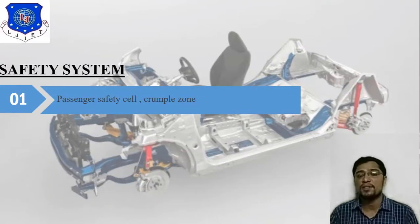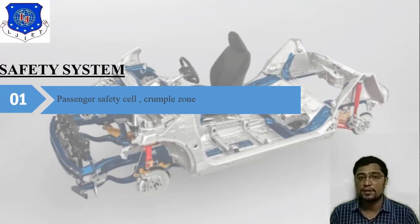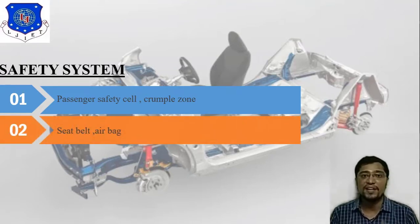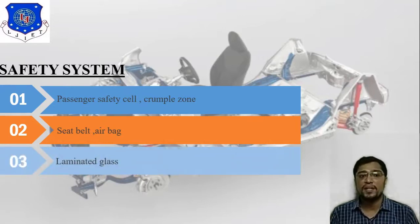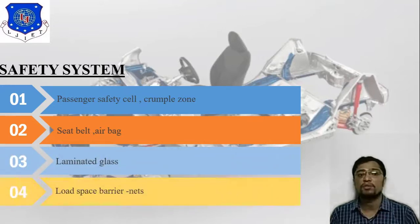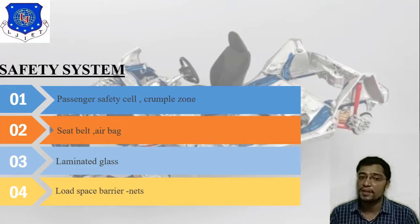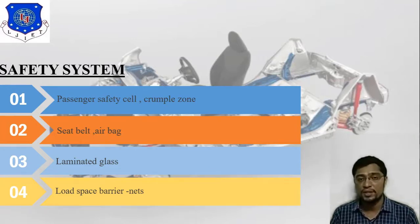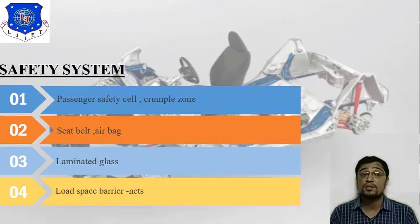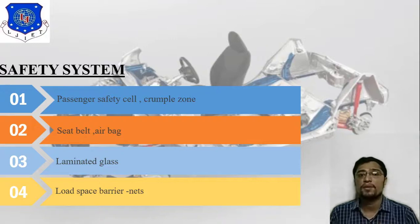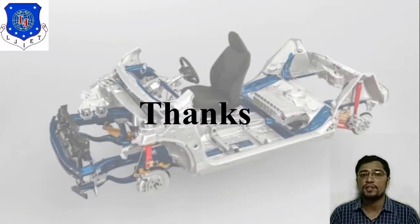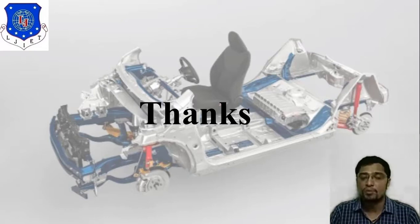In the safety system, the main components include: passenger safety cell and crumple zone, seatbelt and airbag, laminated glass, and load space barrier nets. There are two types of safety — active safety and passive safety. In this session we have completed the crash test topic. Thank you so much.